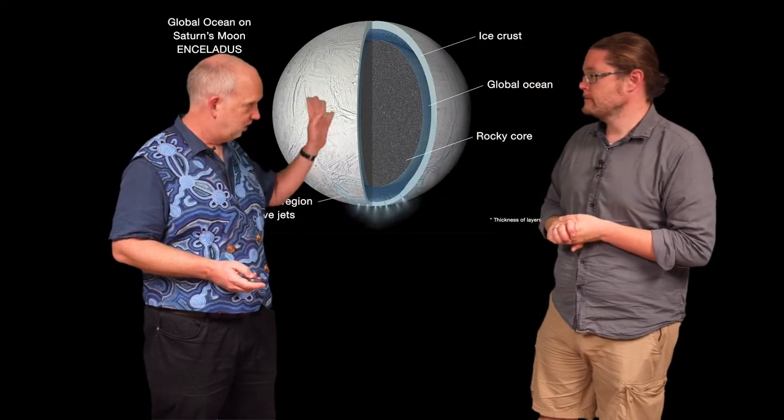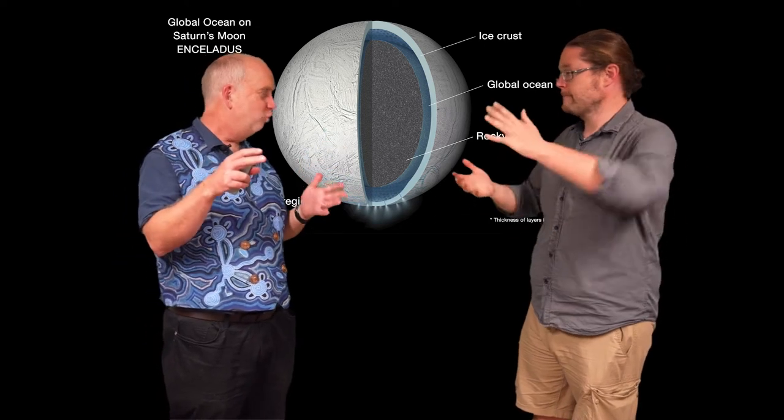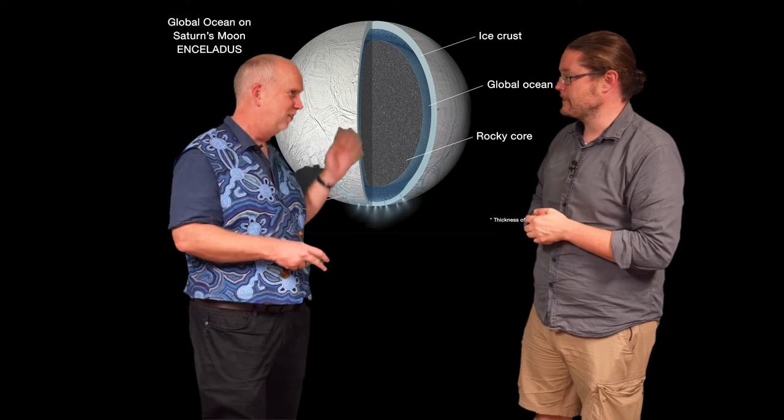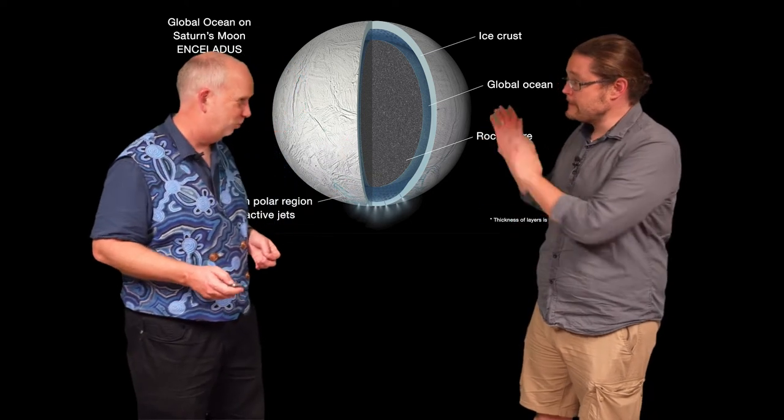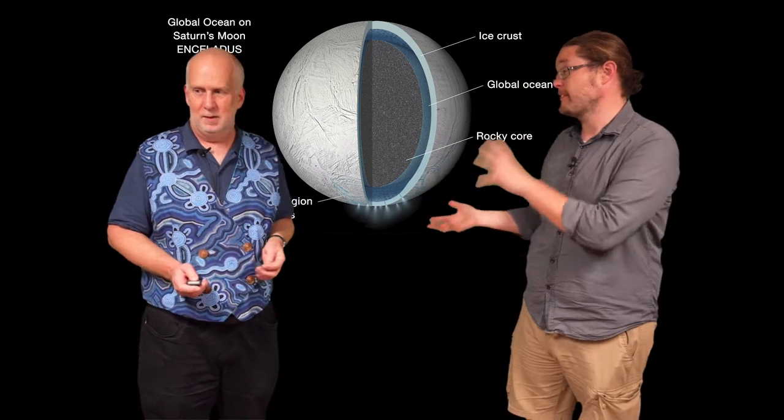In this case, the ice crust is a bit thinner. In some cases, we believe it's like hundreds of kilometers of ice for the water. In this case, it might only be 10 kilometers of ice. And this is because, again, we see it seeping out and spilling out. So we kind of know it has to be somewhat closer.